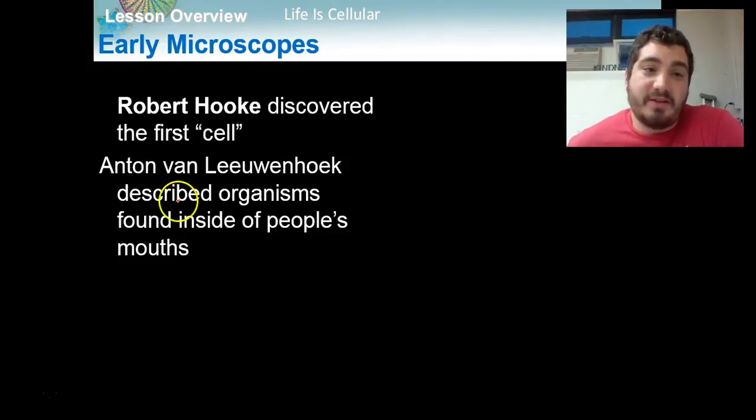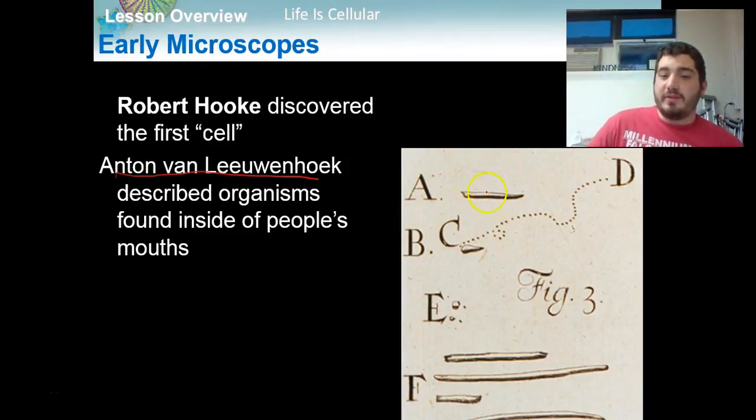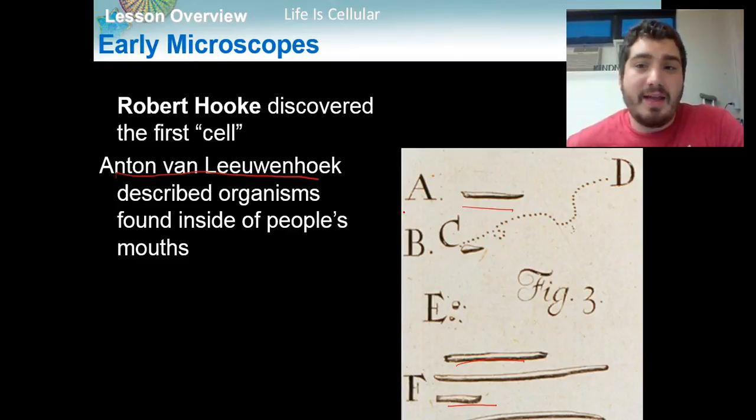So after Robert Hooke first discovered cells, microscopes and technology started to advance throughout the 1700s, 1800s. And we have this guy called Anton von Leeuwenhoek, who's a German scientist, who discovered organisms found inside of people's mouths. So he took little swabs, put them inside people's mouths, looked under a microscope, and he drew what he saw. And he saw all these little things like this, and little guys swimming around at dotted lines, and these guys, and these guys. And what he was actually looking at was bacteria. So he was the first person to look at bacteria. And again, he used this term that Robert Hooke first used called the cell to describe what he was seeing under a microscope.